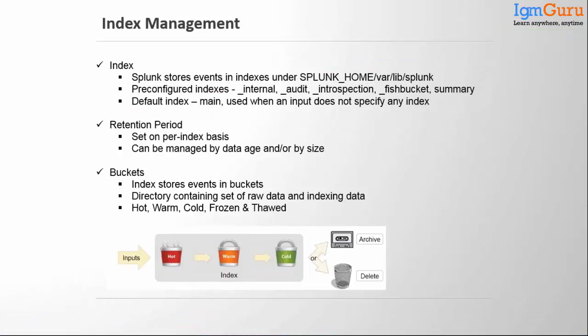Today we covered: what Splunk is, why we use it, rival tools and why Splunk is better, different Splunk products like Splunk Enterprise, Splunk Universal Forwarder, and Splunk Cloud, and each component of Splunk Enterprise — indexer, search head, deployment server, license master, heavy forwarder, cluster master, and search head cluster. We also discussed the deployment client, basic system requirements, licensing types — enterprise trial, enterprise, and free — and index management including pre-configured indexes, retention periods, and bucket concepts.